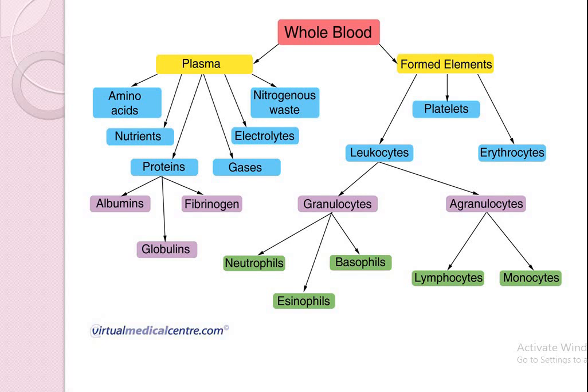Formed elements are three types present in the blood: platelets, leukocytes, and erythrocytes. Leukocytes are of two types: granulocytes and agranulocytes. Granulocytes are neutrophils, eosinophils, and basophils. Agranulocytes are lymphocytes and monocytes.